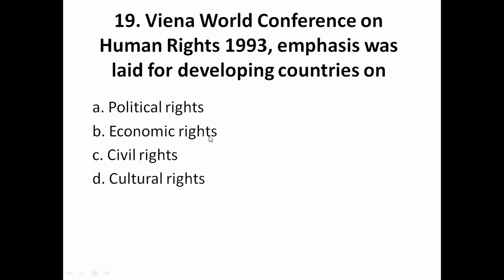The Vienna World Conference on Human Rights, 1993, emphasized that for developing countries the focus was on: A — political rights, B — economic rights, C — civil rights, D — cultural rights. The correct answer is B — economic rights.